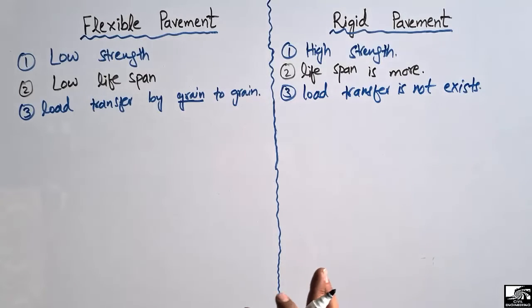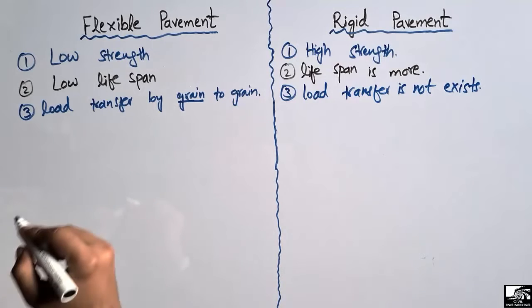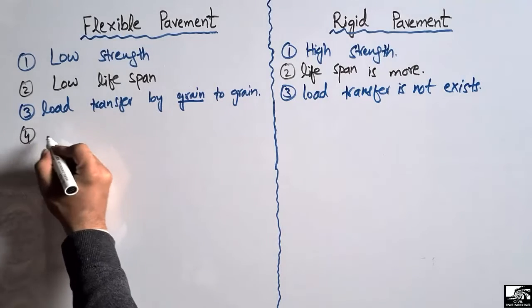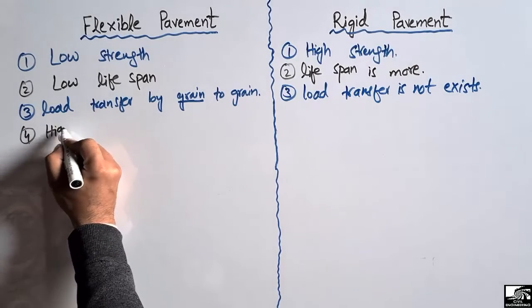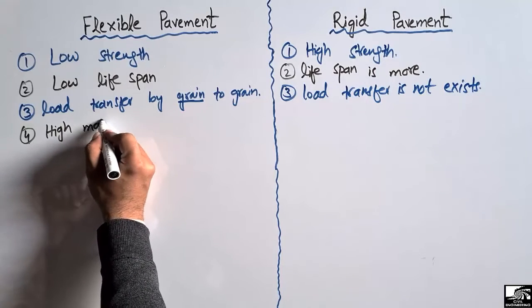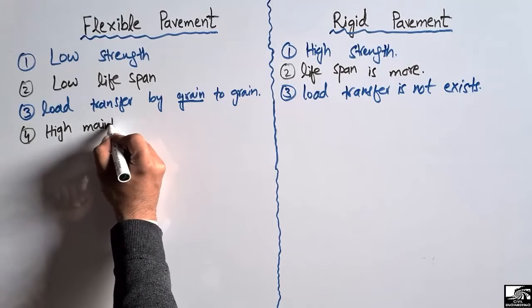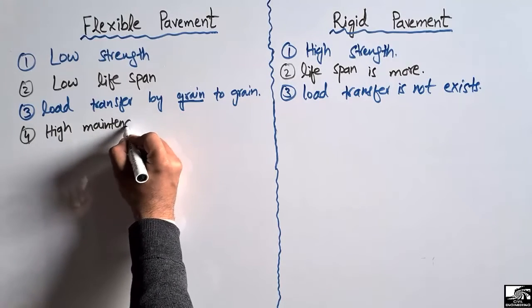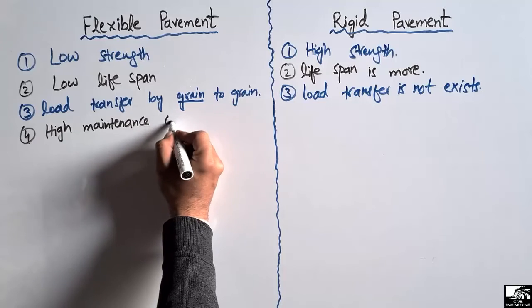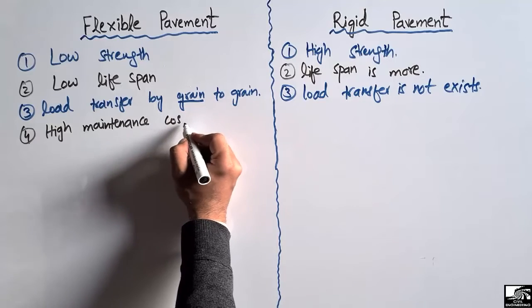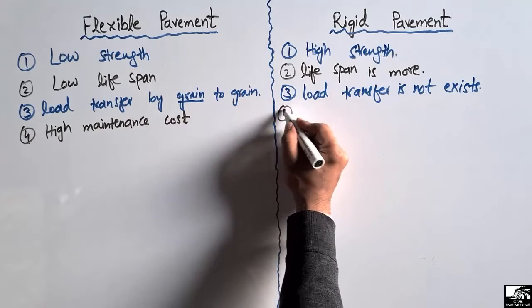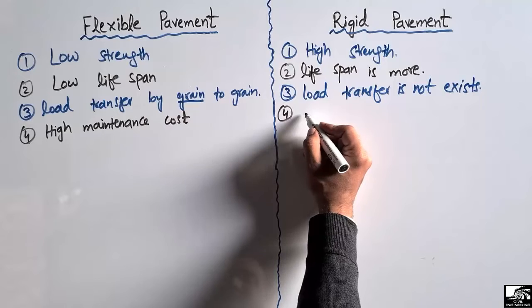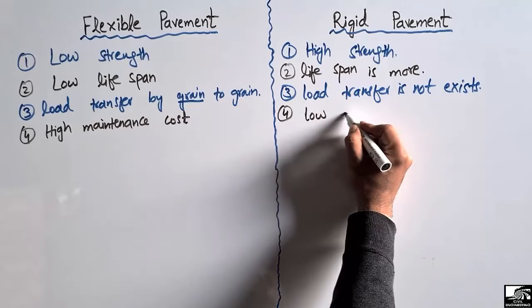The fourth difference is that flexible pavement has high maintenance cost, while rigid pavement has low maintenance cost.